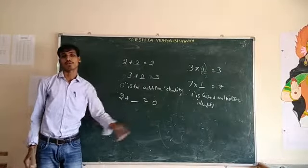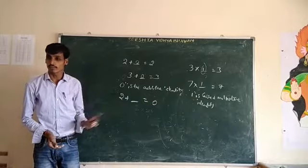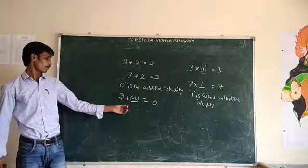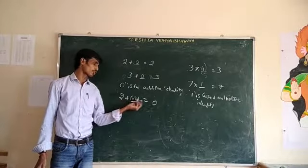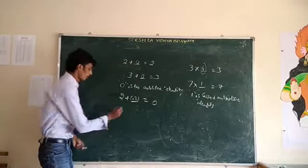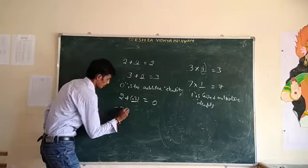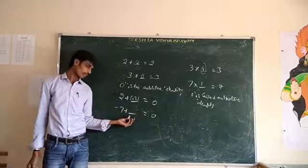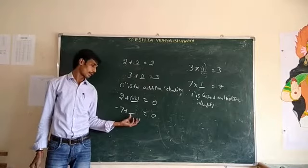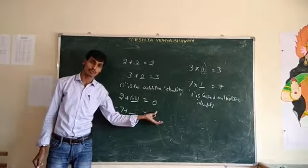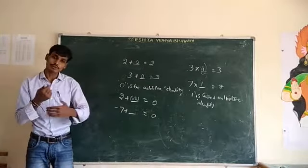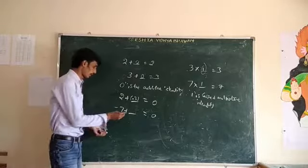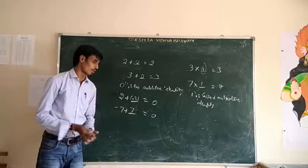Next: 2 plus blank is equal to 0. Can you fill the blank? Minus 2. Because 2 plus minus 2 is equal to 0. And minus 7 plus blank is equal to 0 — the answer is 7, since minus 7 plus 7 gives 0.